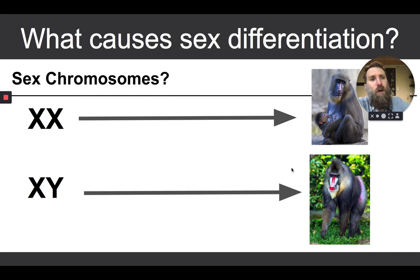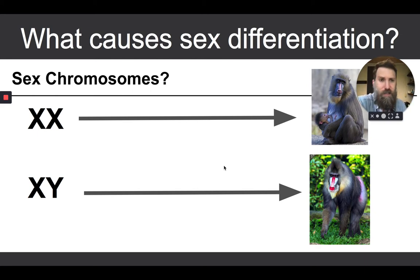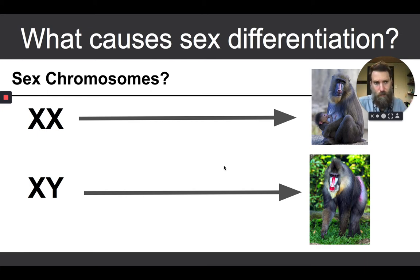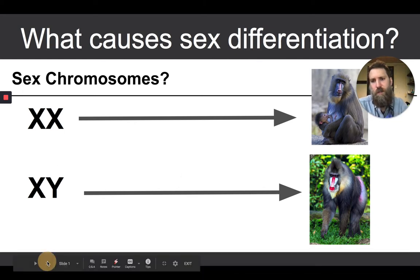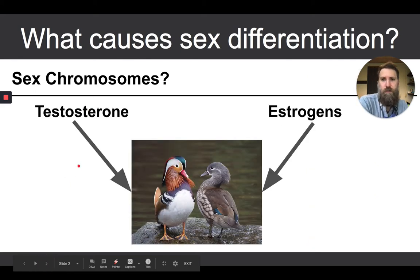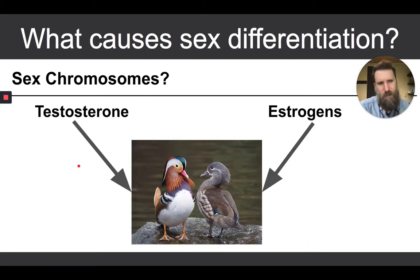We came up together as a group that it probably has something to do with sex chromosomes. We loosely know that XX in mammals gives rise to the female phenotype, and XY gives rise to the male phenotype — those individuals that make large gametes (eggs) or small gametes (sperm), respectively. We also discussed that it probably has something to do with hormones, like testosterone and estrogens.